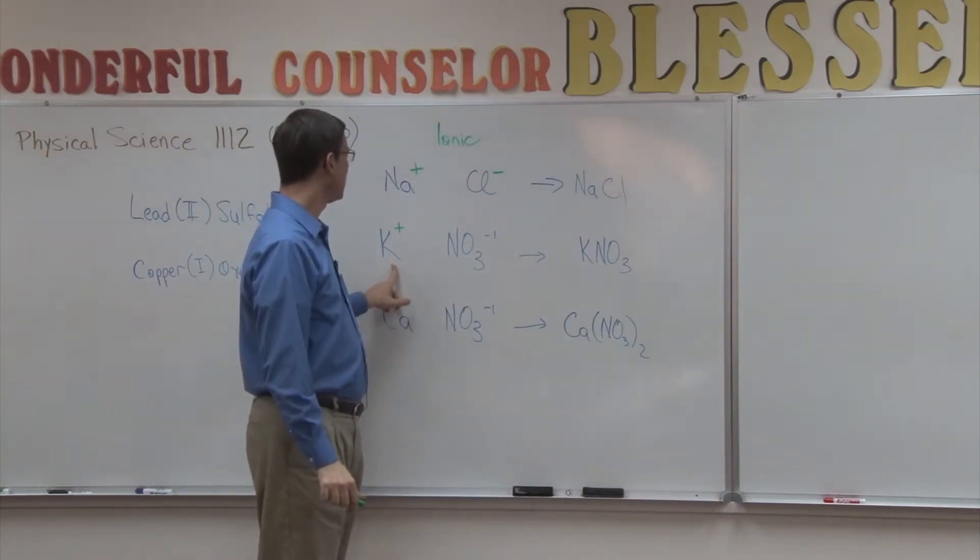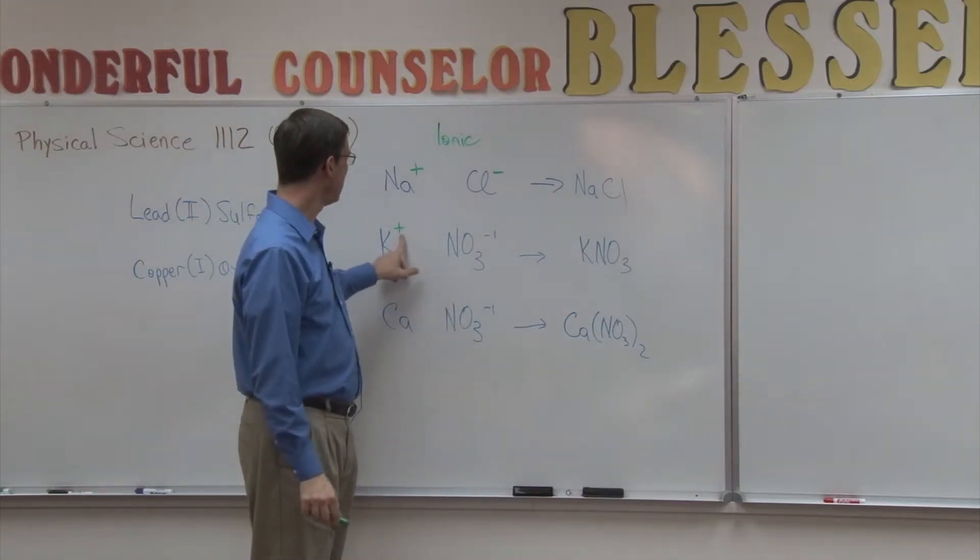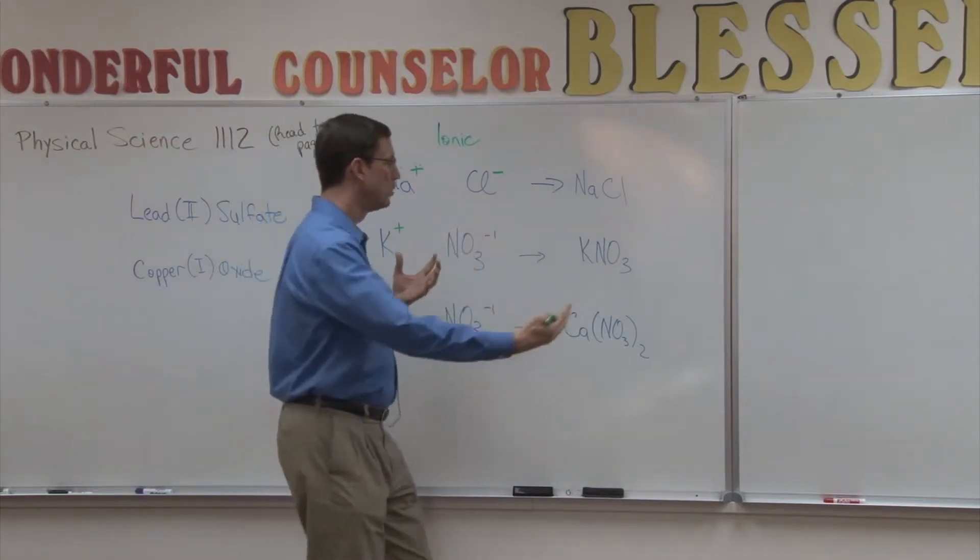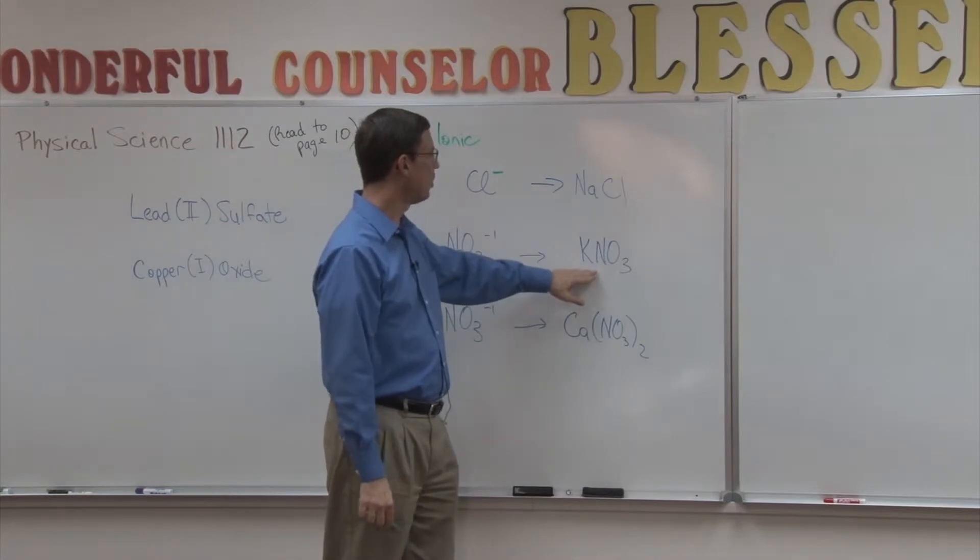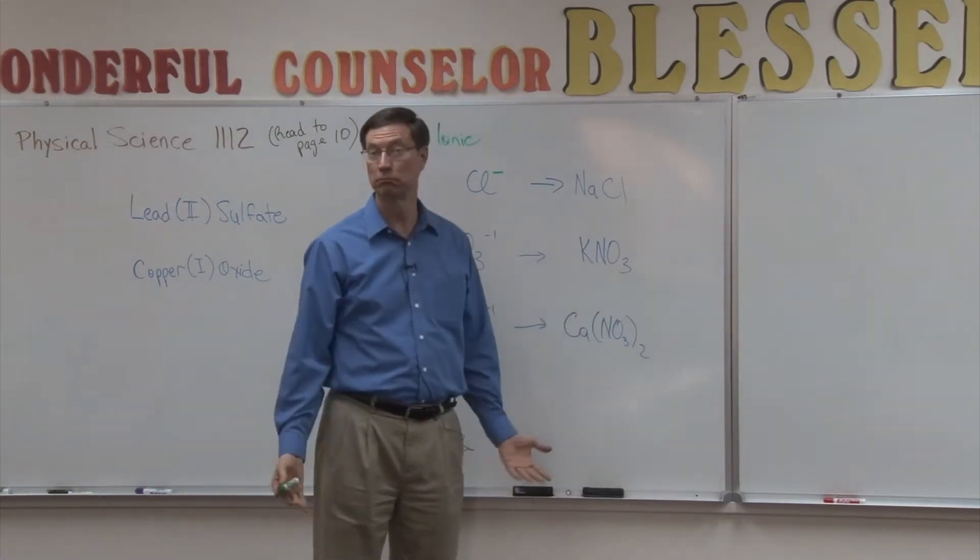So if I take one potassium and one nitrate ion, they have a positive one and a negative one charge. So they will just bond together. And we would call this molecule that's formed potassium nitrate.